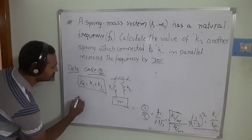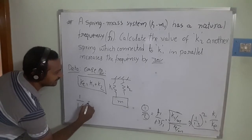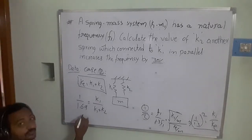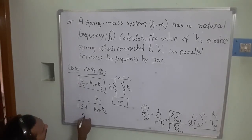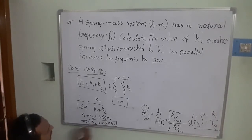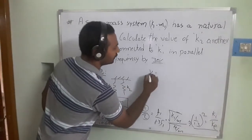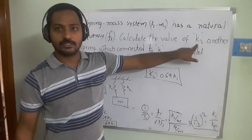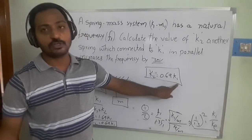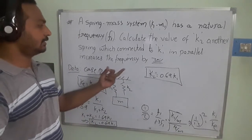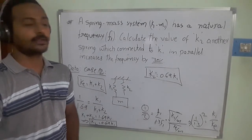So 1/1.69 = k1/(k1 + k2), which gives k1 + k2 = 1.69 × k1. Therefore k2 = 0.69 × k1. This means the stiffness of the second spring added in parallel is 0.69 times the stiffness of the first spring. That is how we calculate the stiffness of the second spring added in parallel to the first spring. Thank you.